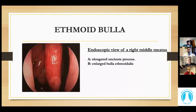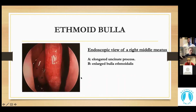Here you can see an endoscopic view with an elongated uncinate process and enlarged bulla ethmoidalis. The ethmoid bulla is located within the middle meatus, directly posterior to the uncinate process and anterior to the basal lamella of the middle turbinate. It is the largest and most constant of the ethmoid cells, showing varying degrees of pneumatization. A heavily pneumatized ethmoid bulla may cause significant narrowing of the middle meatus.